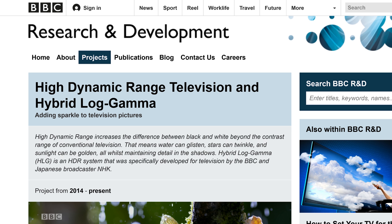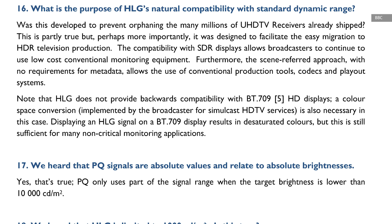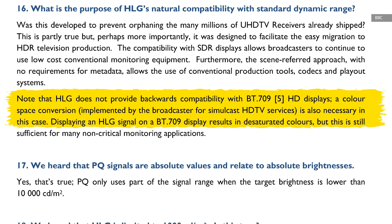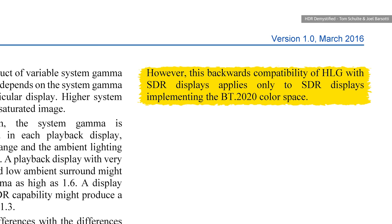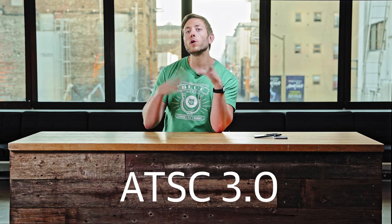HLG — the high dynamic range standard designed for backwards compatibility with older SDR TVs — will actually only render properly on TVs that support the REC 2020 color space, which few current SDR sets do, and essentially none that are older than three or four years. Other TVs may get some pretty gnarly color shifts. Also, a new broadcast standard called ATSC 3.0 would allow for 4K HDR over the air, but it's been slow to deploy, and you'll probably need either a new TV or an antenna adapter to use it if it ever does become popular.